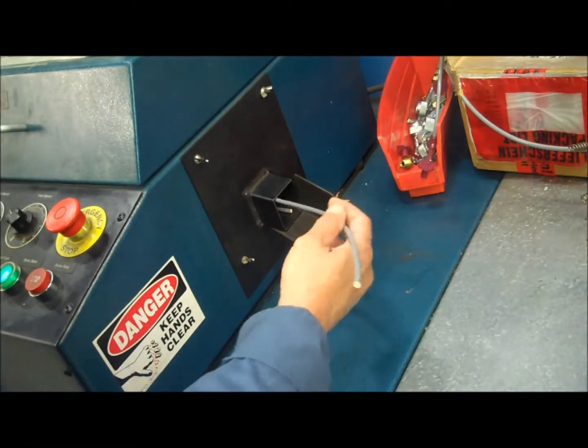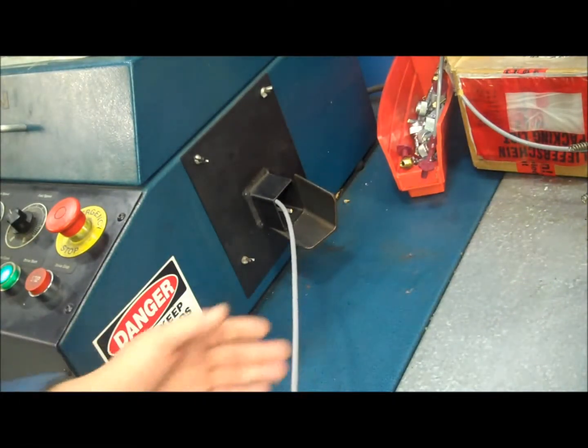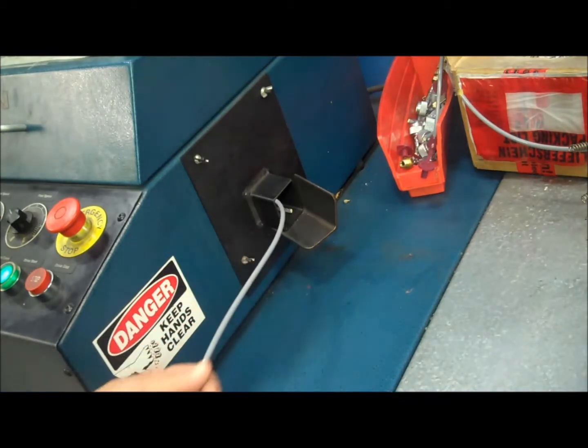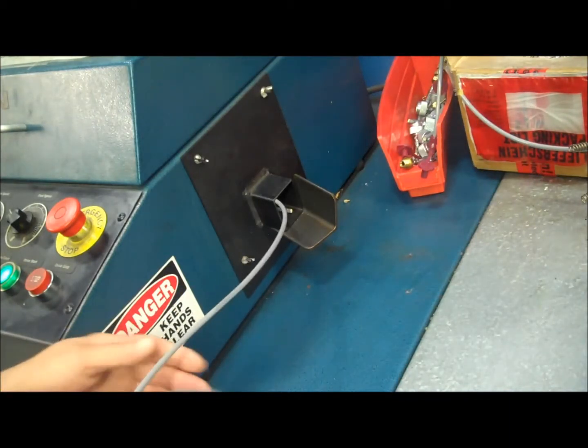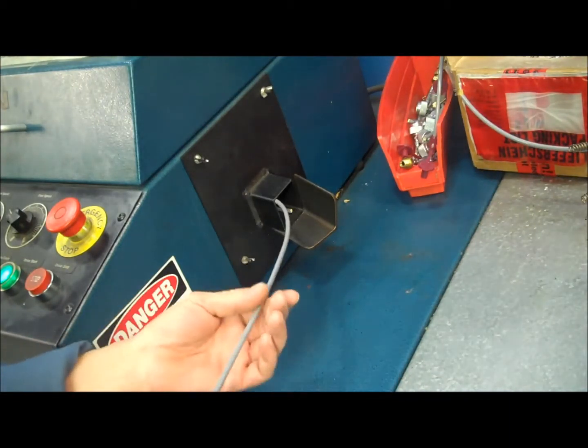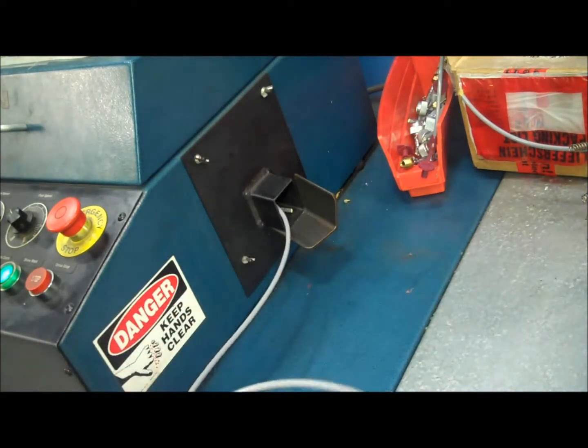Here we have the machine that'll unwind the spool of hose and take it to the length it needs. It's all programmed in. When it gets to the length it is cut off and you'll see that happen here shortly.